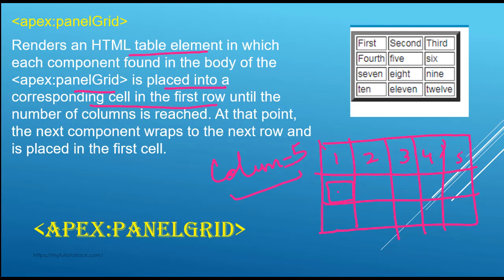Now where do you specify this column number? You specify it in the panel grid attribute. There is an attribute called 'column' — that's where you specify how many columns there will be.